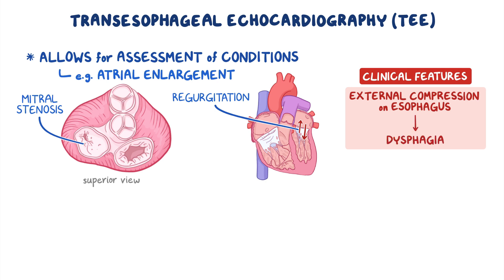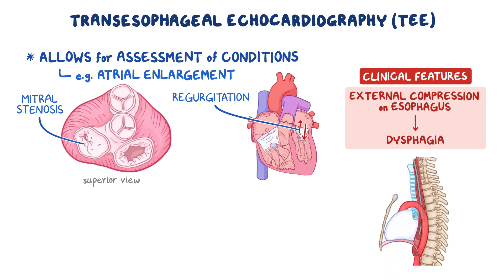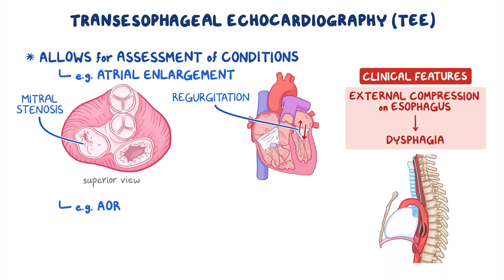Furthermore, the descending aorta lies posterior to the esophagus, so TEE can visualize aortic abnormalities such as dissection or aneurysm.